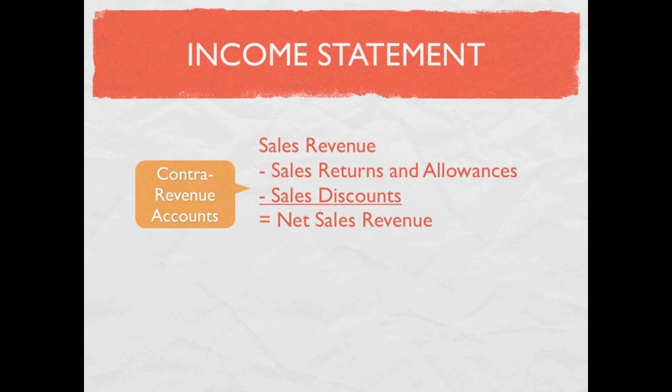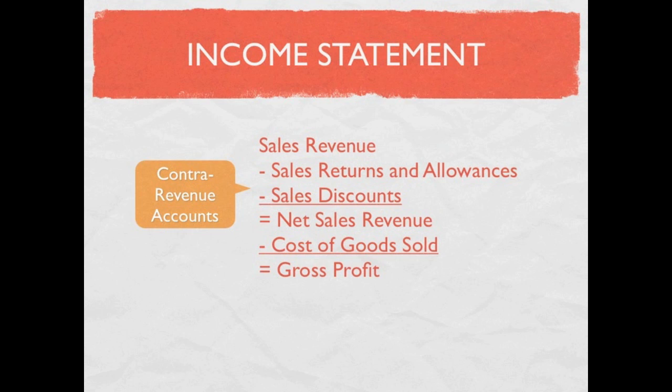From net sales revenue we're going to subtract cost of goods sold. When we sell our inventory, we expense the cost of those goods — that's called cost of goods sold. So net sales revenue minus cost of goods sold equals gross profit. From gross profit we subtract our operating expenses, and that gives us our operating income.